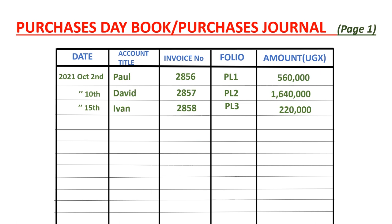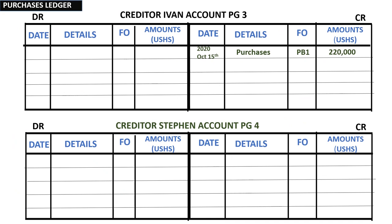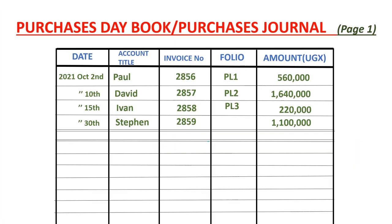Our last transaction is on the 30th. Stephen supplied us goods. The invoice number is 2859 and the amount is $1,100,000. We open up Stephen's account in the purchaser's ledger and credit it with $1,100,000. The other item affected is purchases in the purchases day book on page one. Stephen's account is on purchaser's ledger page four, so we post PL4 in the folio column.